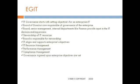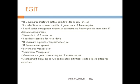When we talk about governance, we are talking about enterprise objectives that are set and agreed upon by various stakeholders — owners, users, and members of the enterprise. Management's role is to ensure proper alignment: that plans, builds, runs, and monitoring are in place to achieve the enterprise's objectives.